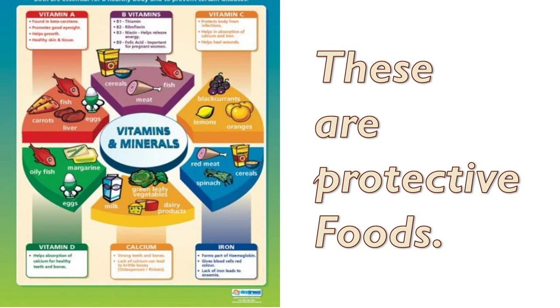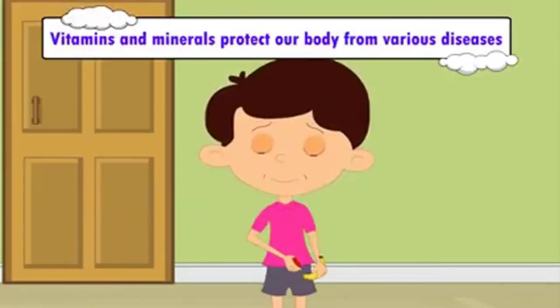If there is a lack of vitamin A, our eyesight becomes weak. If vitamin D is less in our diet, our bones and teeth become weak. Minerals are also very important nutrients in our food. Calcium, iron, potassium, sodium and iodine are some minerals our body needs. Lack of calcium weakens our bones and teeth, and lack of iron causes anemia. If we eat all the fruits and vegetables of different seasons, we can protect our body from various diseases.